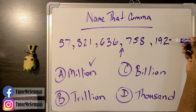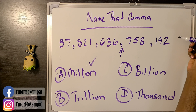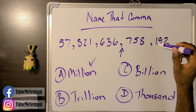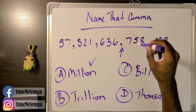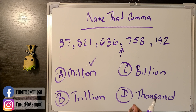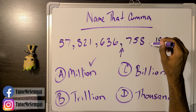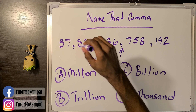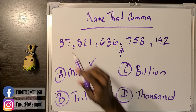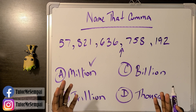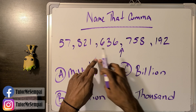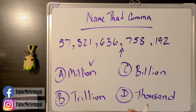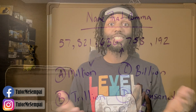Remember, you're always going to start from your right. Start from the right and name them in order, but you have to remember the order in which they show up: thousand, million, billion, trillion. If you can nail that order and remember these names, reading a number this big is going to be much, much easier.